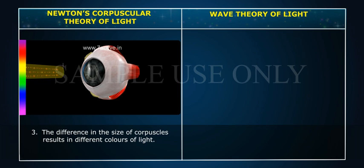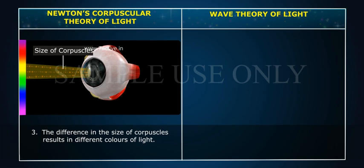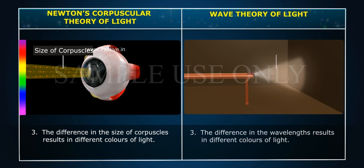Point 3: The difference in the size of corpuscles results in different colors of light.